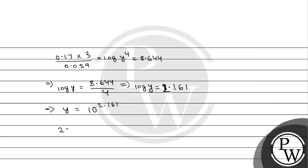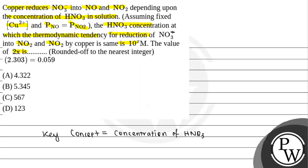So 2x equals 2 multiplied by 2.161, which equals 4.322. So the answer is option A, 4.322. Hope you understood it well. Thank you so much.